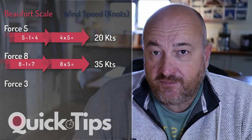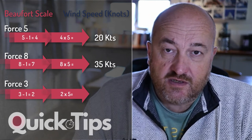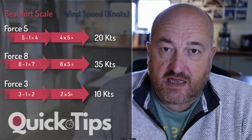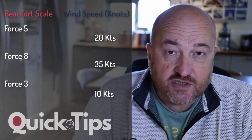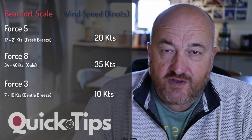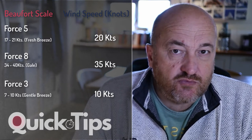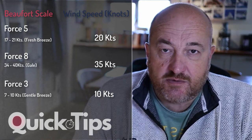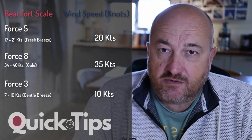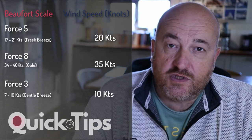Beaufort force 3 minus 1 is 2, multiplied by the constant of 5, is 10 knots. If we look at the Beaufort scale ranges, we can see that gives us pretty much a median figure within the range for that Beaufort scale. So as a ready reckoner, and certainly accurate enough to sail to and plan to: take the Beaufort scale, take off 1, and multiply by a constant of 5 — it will give you wind speed in knots.